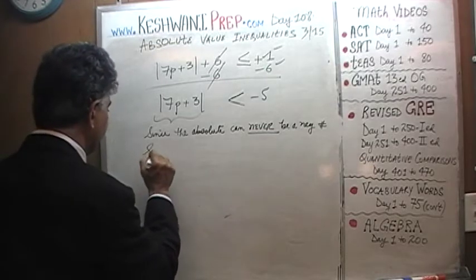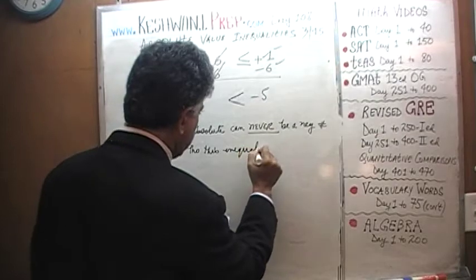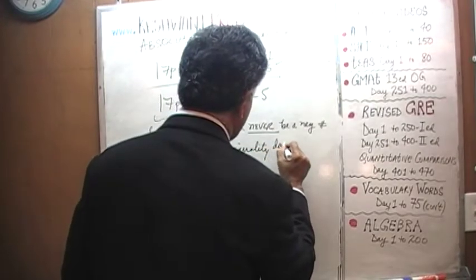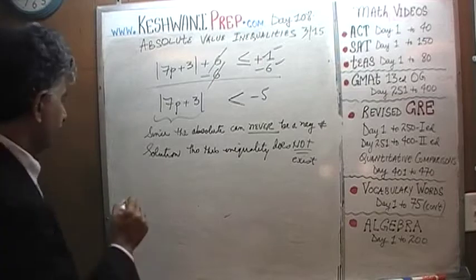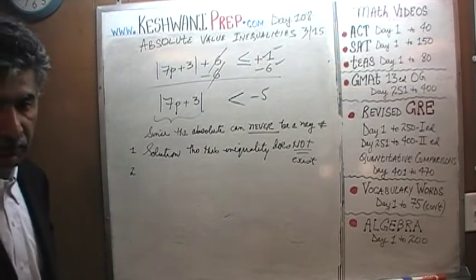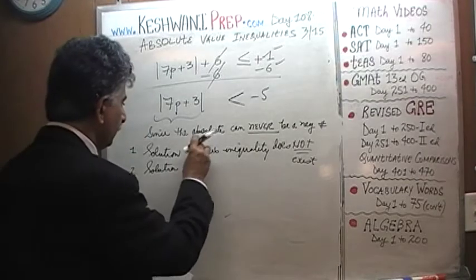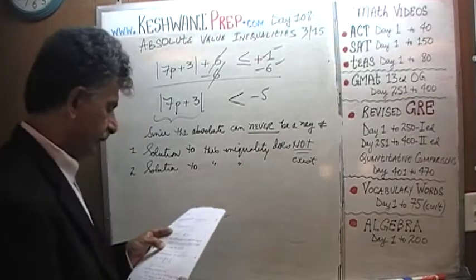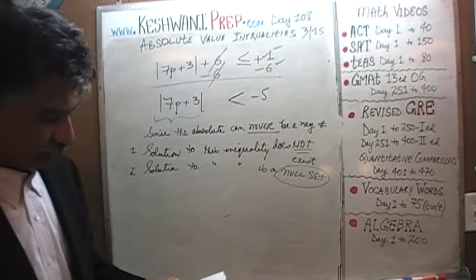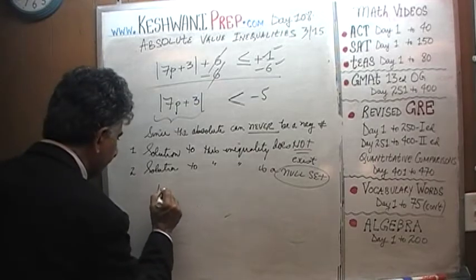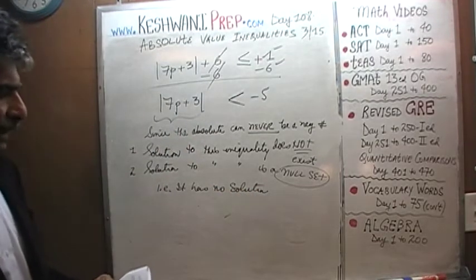The solution to this inequality does not exist. That is one way of saying it, or sometimes in math books they will tell you that the solution is a null set. Null set means it does not exist, it is an empty set, which is the same as saying it has no solution.